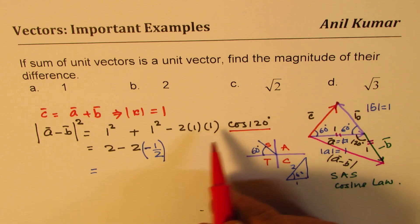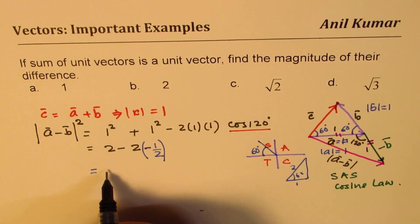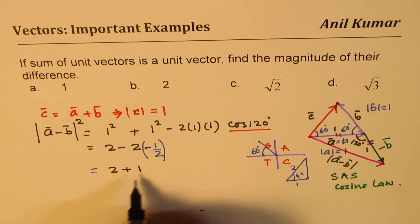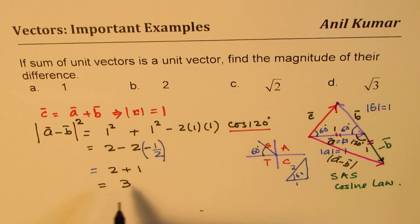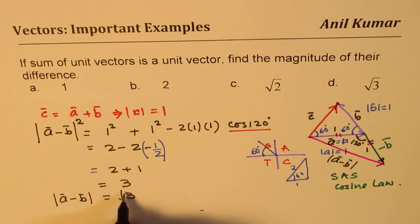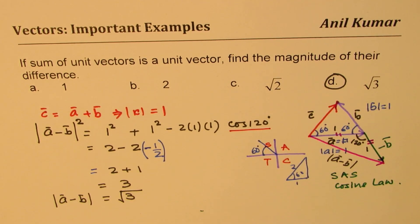So in quadrant 2, cos is negative. So it is minus half in this particular case. So what we get here is 2 plus 1. So the answer is 3. So the difference will be, I mean, this is square. So the magnitude of the difference will be square root of 3. So option D is the right option. Is that clear to you?